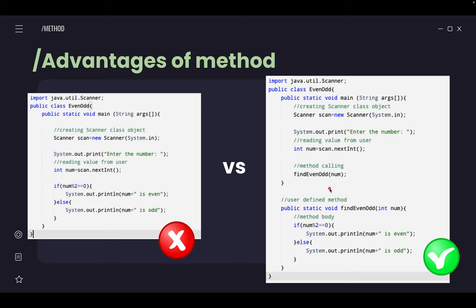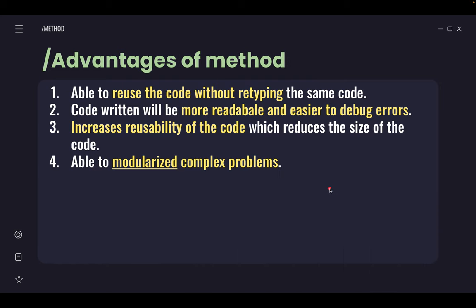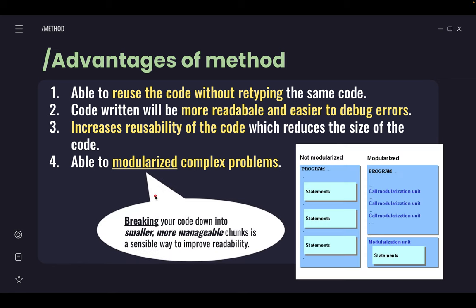What are the advantages of methods? First, you are able to reuse the code without having to retype again and again. Second, the code you write will be more readable and easier to debug errors. With the use of methods, you are able to increase the reusability of your code, hence reduce the size of your code. This means in the main method section, it becomes more concise and saves time.